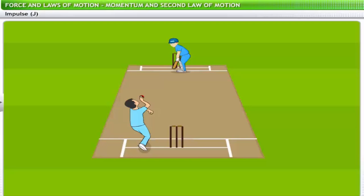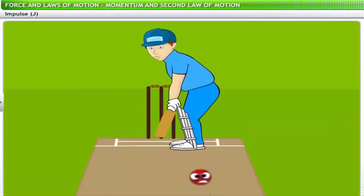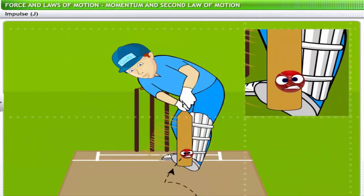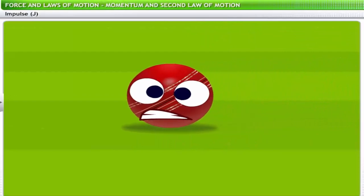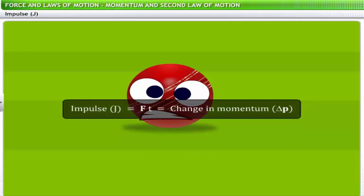Consider a cricket ball bowled towards a batsman. The batsman strikes the ball with a large force that acts on the ball for a moment. The impact of the bat enables the ball to change its velocity in magnitude as well as direction — this is the impulse of the bat on the ball. Impulse is numerically equal to the change in momentum, denoted by J, and measured as the product of force and time.